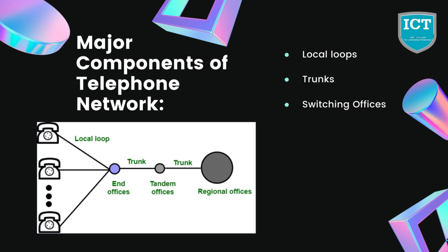Its bandwidth is 4000 Hz. It is very interesting to examine the telephone number that is associated with each local loop. The office is defined by the first three digits and the local loop number is defined by the next four digits.